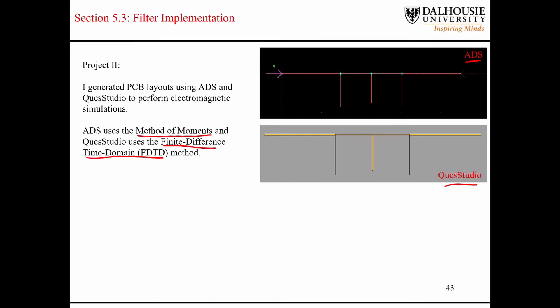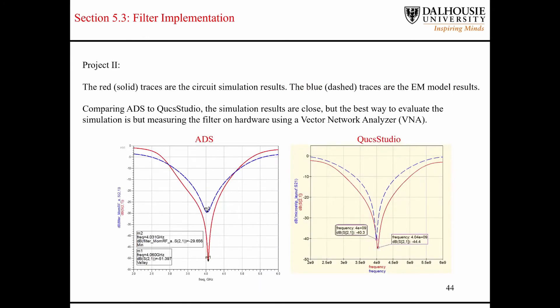Let's take a look at the results. Here are the results. We have ADS on the left, and QUCS Studio on the right. We were designing a bandstop filter for 4 gigahertz. The red curves are the circuit simulations in both cases. And then the blue curves with the dotted lines, those are the EM simulations. Red is circuit, blue is EM.